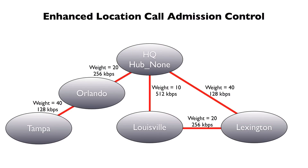Now in Communications Manager version 9 we have enhanced location CAC. We can go into Communications Manager and accurately model our entire topology. Not only can we specify bandwidth amounts for each link, we can assign a weighting to each link in the range of 0 through 100. This works a lot like a routing protocol — for example, the direct link from HQ to Lexington has a weight of 40, but going HQ to Louisville to Lexington gives weights of 10 plus 20, totaling 30, which is the better path.